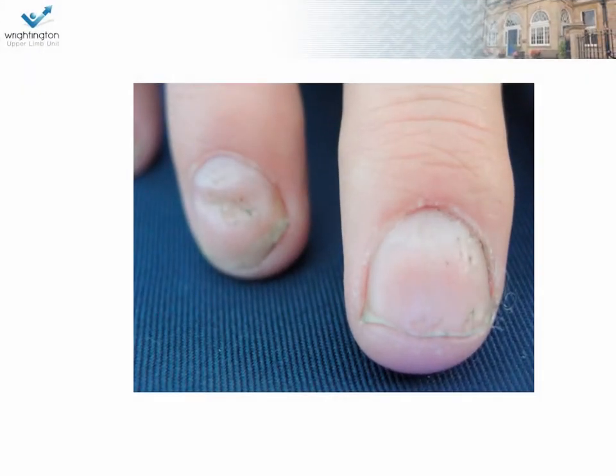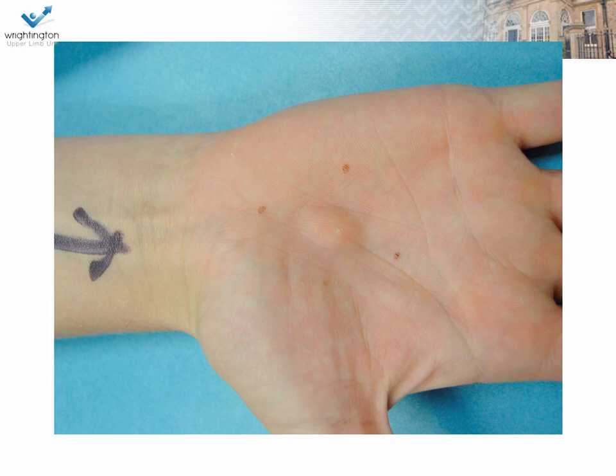Describe these nails to me. What abnormalities do you see? What underlying systemic disease might this patient have? This patient presents to clinic with a lump. Can you tell me what the likely diagnosis is? What's that small area of white on the distal end of the lump? Tell me what an implantation dermoid is.